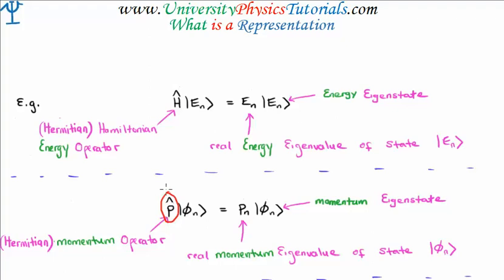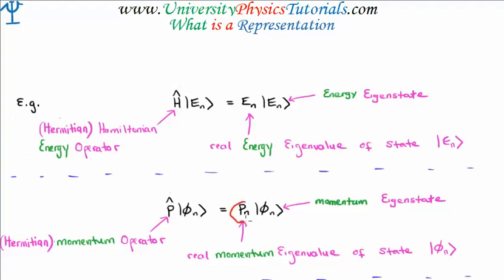The momentum operator, p-hat, is a Hermitian operator, and it acts on one of the eigenstates of the operator itself. It gives us back the same eigenstate or eigenket, but with a multiplicative constant which is the real momentum eigenvalue of the particular eigenstate in question.